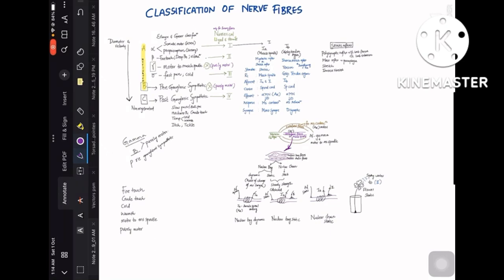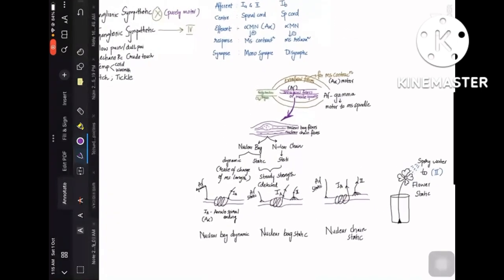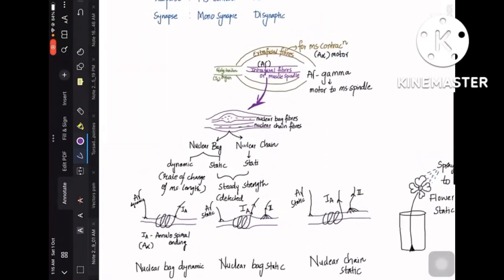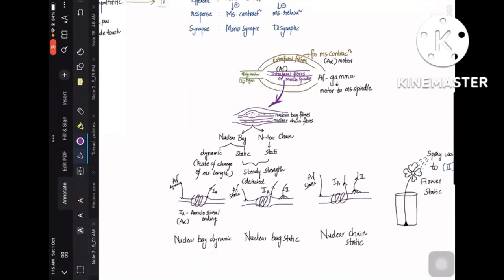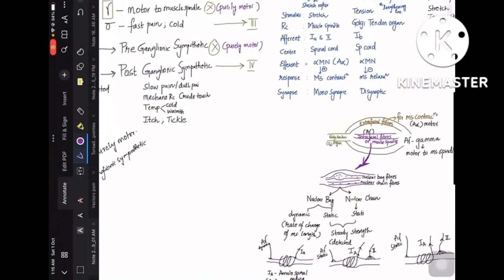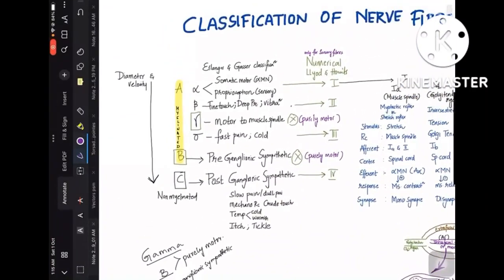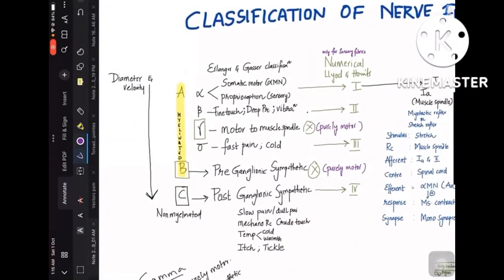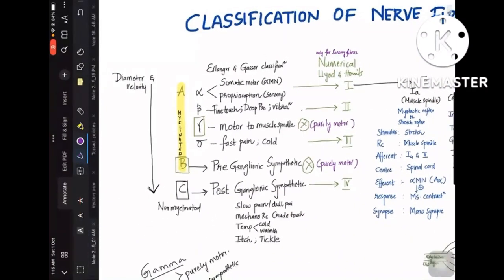Hey guys, here's the video on classification of nerve fibers. I have got you both classifications — the numerical one and the name-based, that is the type of fiber based. I have also got you the differences between muscle spindle and Golgi tendon organ, and a few other things regarding nuclear bag fibers and chain fibers. Let's learn each thing one step at a time.